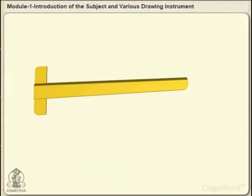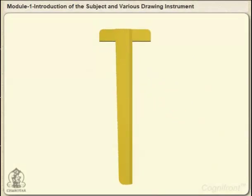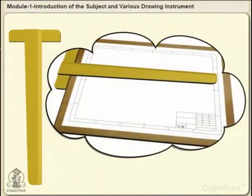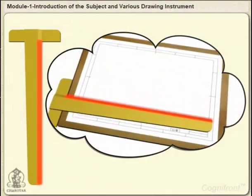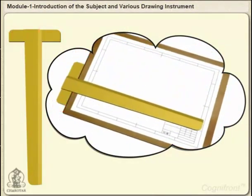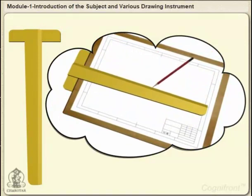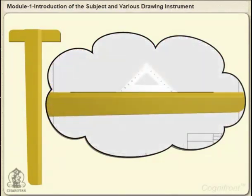The t-square, as the name suggests, is a t-shaped drawing tool. Its straight edge slides along the width of the drawing board with the help of a stop. It is useful in drawing straight lines and also serves as supporting edge for set squares while drawing inclined lines.